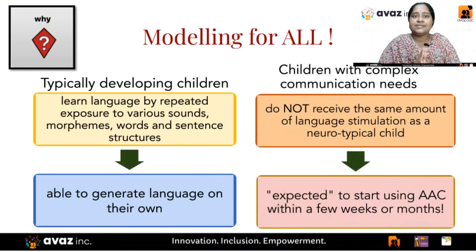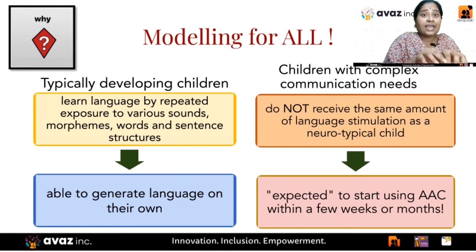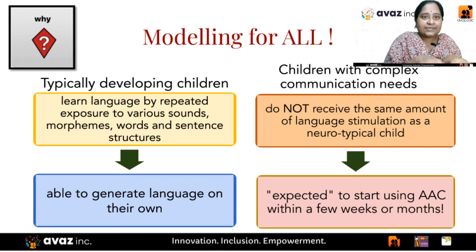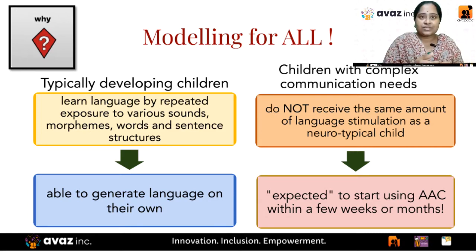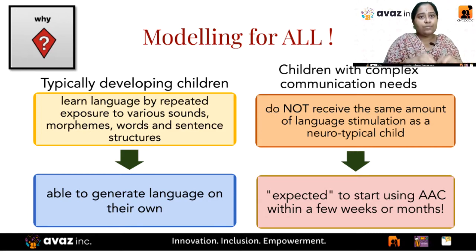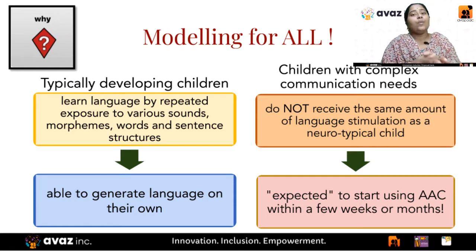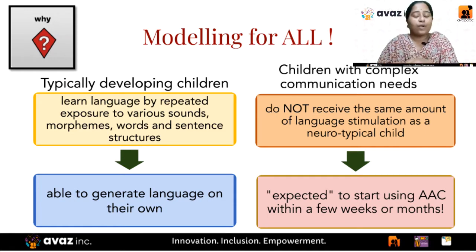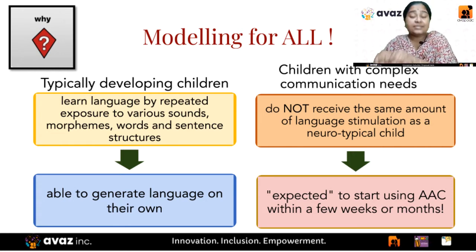As we have seen in this video, typically developing children learn language by repeatedly getting exposed to various sounds, words, and sentence structures. They perceive this and use it to generate language and communicate with others. Whereas for a child with complex communication needs, they do not receive the same amount of language input.